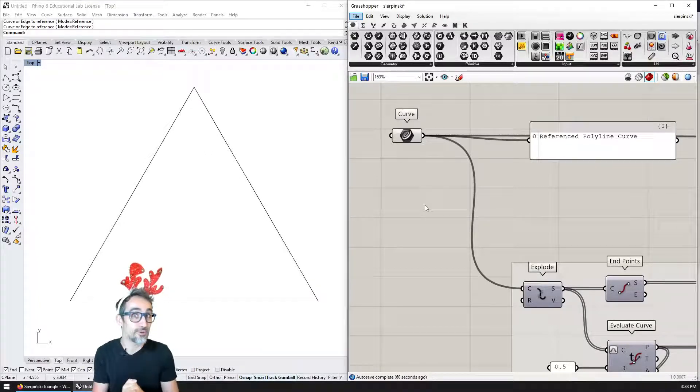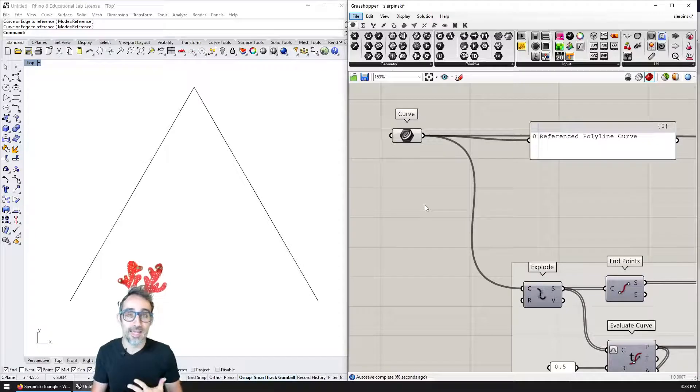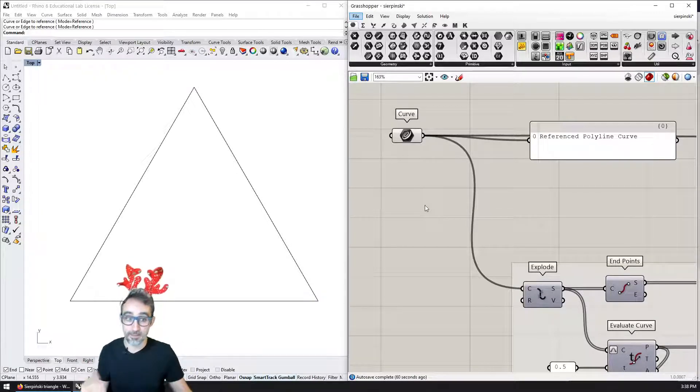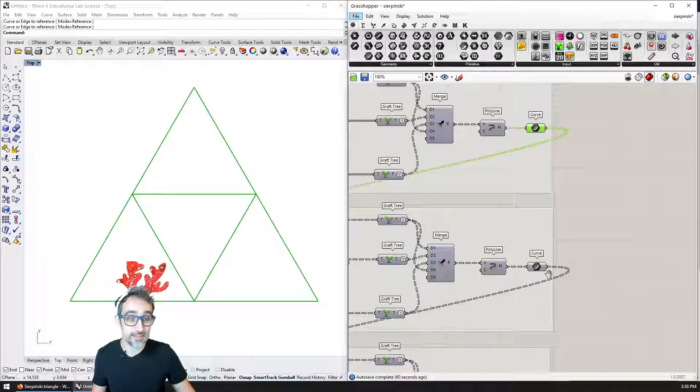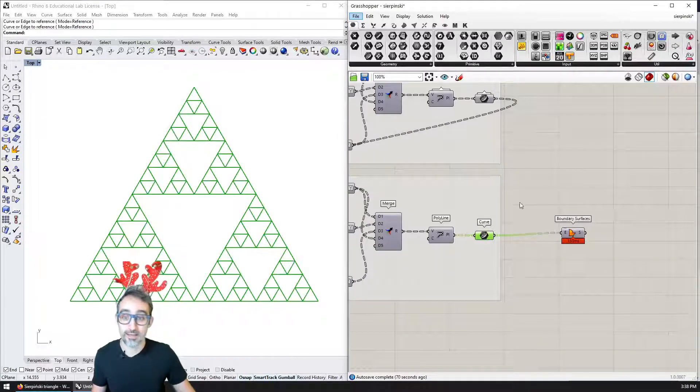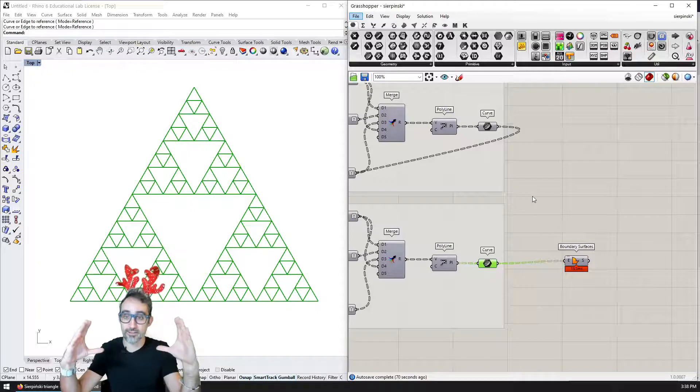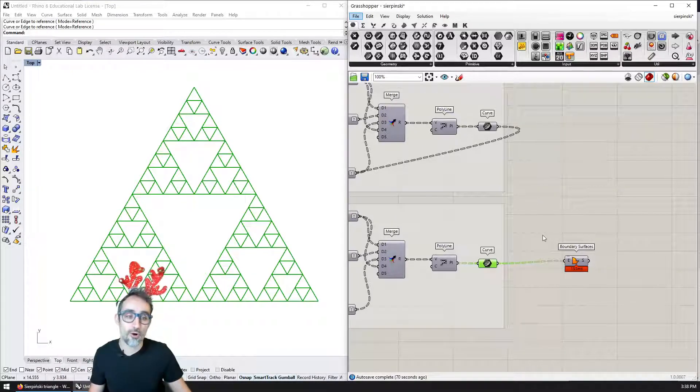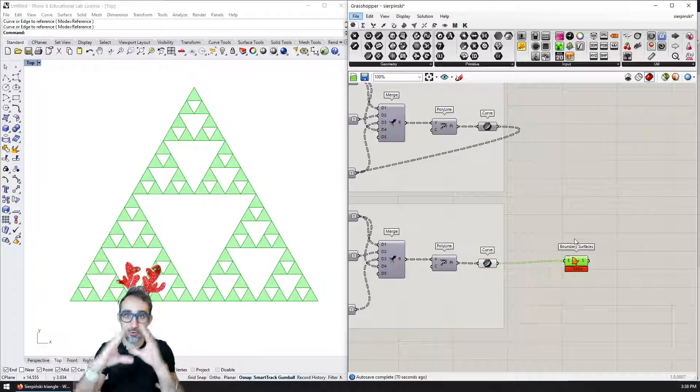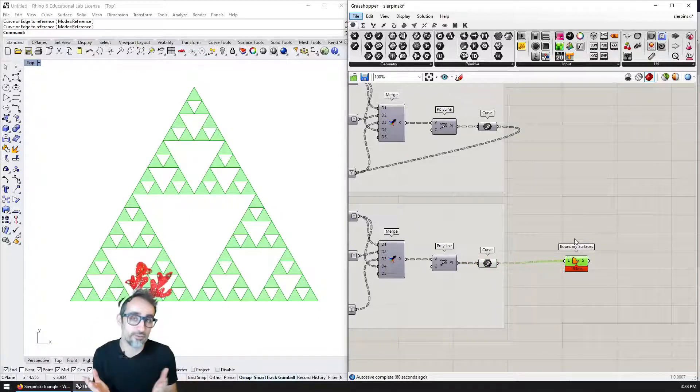In this one, we're going to learn how to model a Sierpinski tree. A Sierpinski tree is basically a shape that is a fractal curve conformed by the recursive subdivision of triangles over and over in a fractal way.